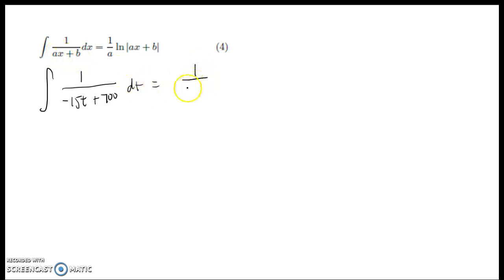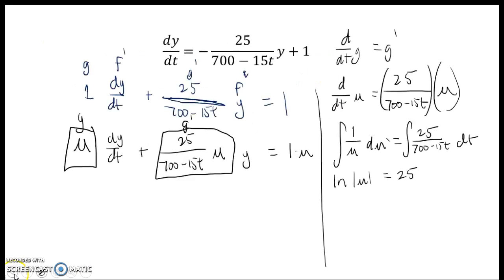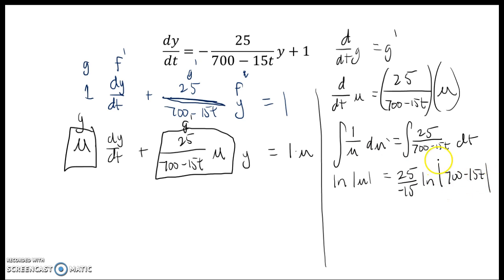That should equal 1 over negative 15 times the natural log of negative 15t plus 700. So I get 1 over negative 15 times the natural log of 700 minus 15t, absolute value. I don't need a plus c because the goal here is simply to find μ, the integrating factor.